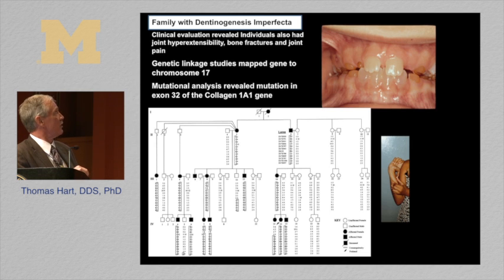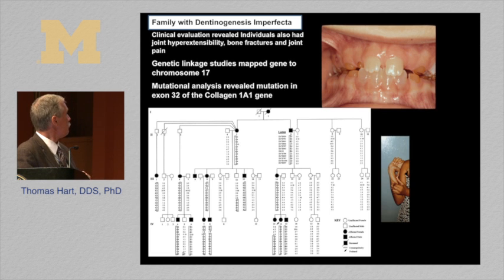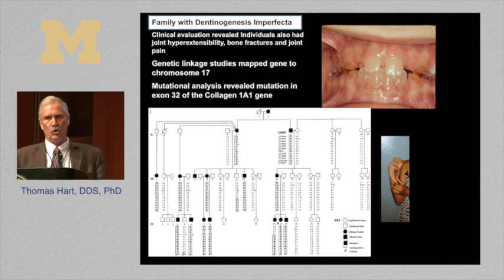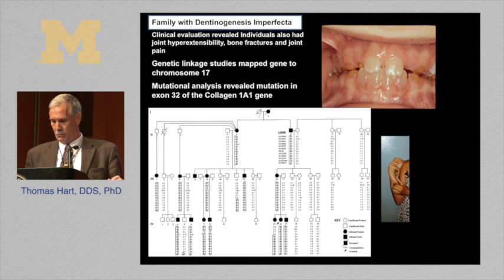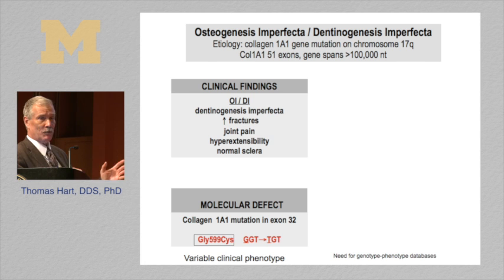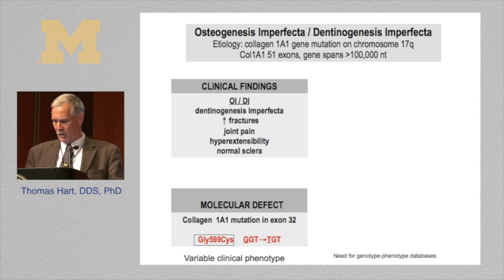Let me show you a case. Dr. Paulos referred family members with dentinogenesis imperfecta as their chief complaint. Examining family members, we found that some affected individuals also had joint hyperextensibility, increased bone fractures, and severe joint pain — joint pain in DI patients that I don't think had been previously reported. We did genetic linkage studies and localized the gene to chromosome 17, so we knew it was a collagen 1A1 gene. We sequenced the gene and found a mutation in exon 32: a nucleotide G to T change causing a glycine-to-cysteine substitution. Now we have a genotype-phenotype correlation — if someone else is identified with this specific mutation, they know what phenotypic findings are associated with it.